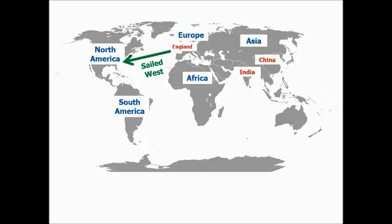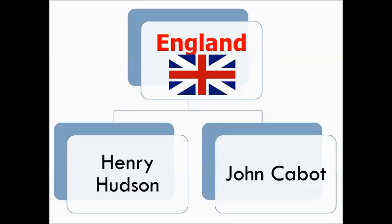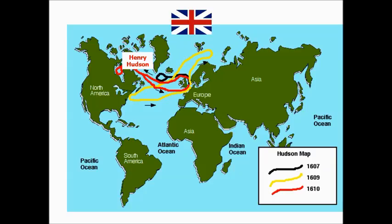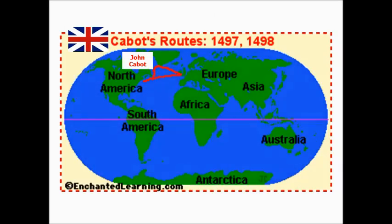Moving on to England — like Spain, England decides to sail west to find a direct route to India and China. We're going to look at two explorers: Henry Hudson and John Cabot. Henry Hudson leaves from England, sails west looking for an all-water route to China and India, and ends up discovering Hudson Bay for the English, also exploring the eastern seaboard of what we call the United States and North America today. John Cabot also explores North America, focusing on the east coast of the United States — he was the second English explorer.